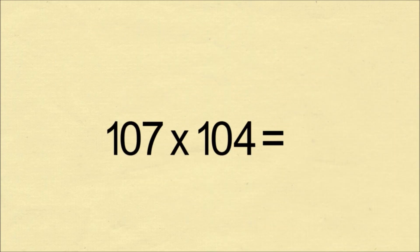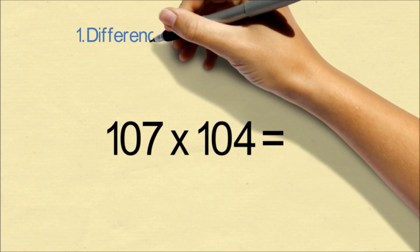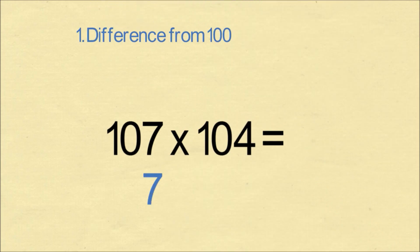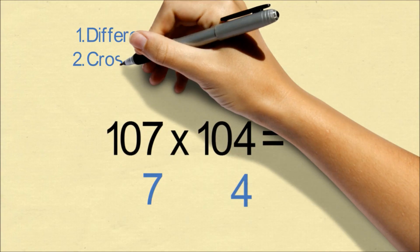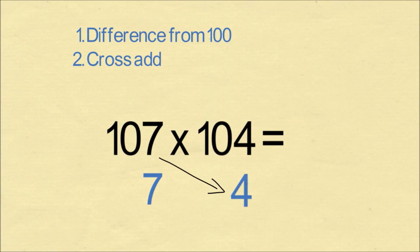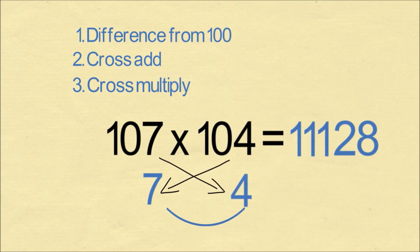This similar process will work if the two numbers are above 100. You take the difference from 100. But now the only difference is we will cross add. 107 plus 4 is 111. We still cross multiply. And that's our answer.